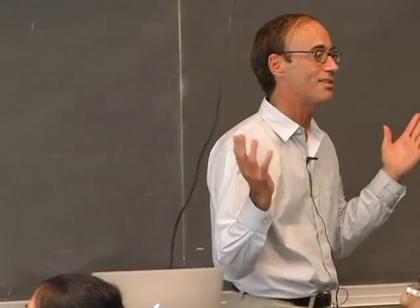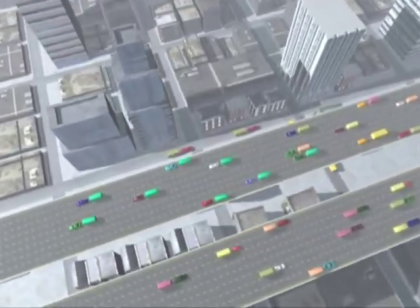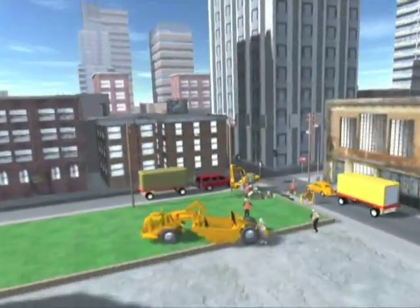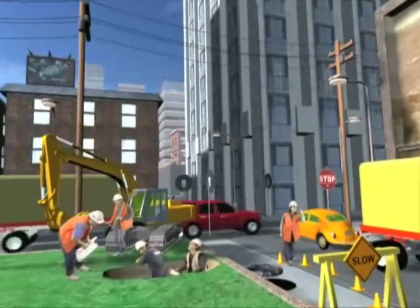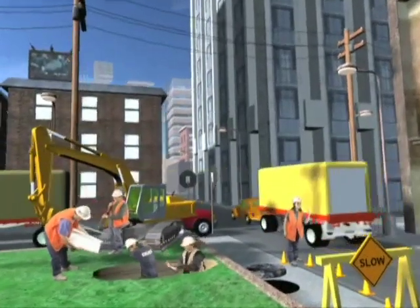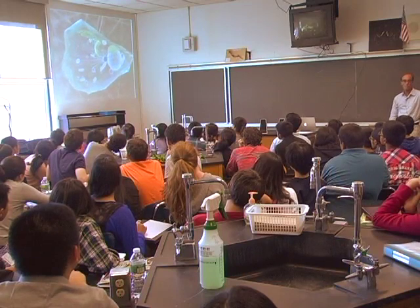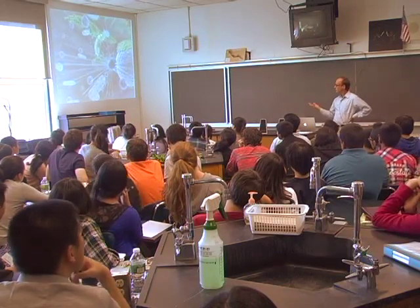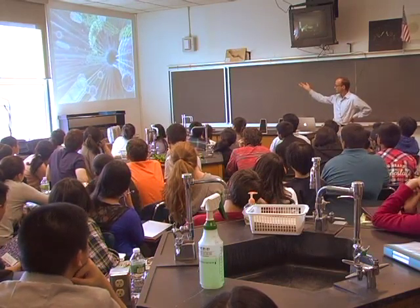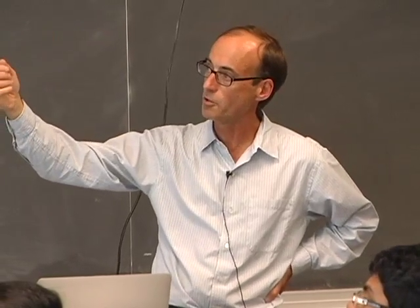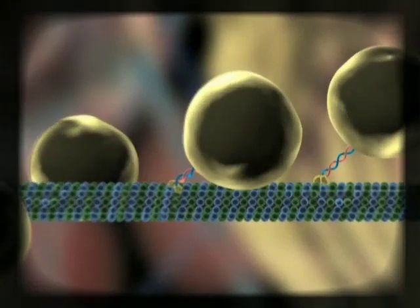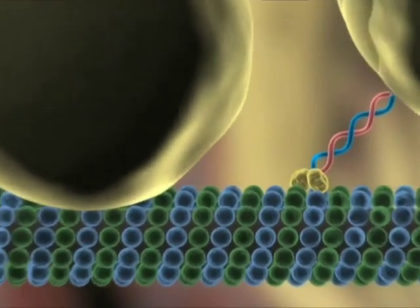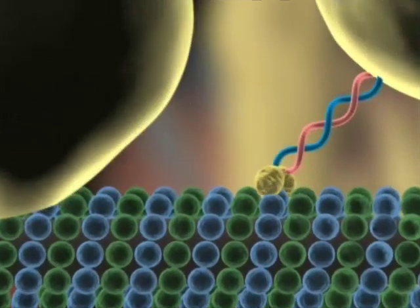Why is there all that movement in a cell? We make things in certain parts of the city and have to distribute them — things are made in some places, they're distributed in cargo containers transported by engines that move things around the city. The cell works the same way. There are roadways, and that's what I'll tell you about. This shows a blow-up of one of those roadways, called a microtubule, with cargo being carried by a motor protein called kinesin.